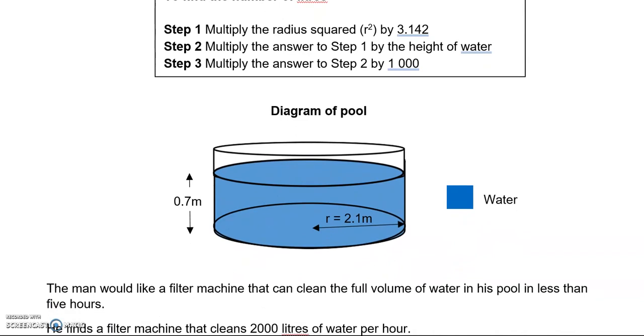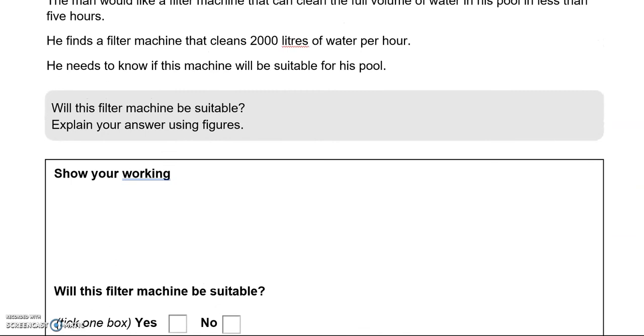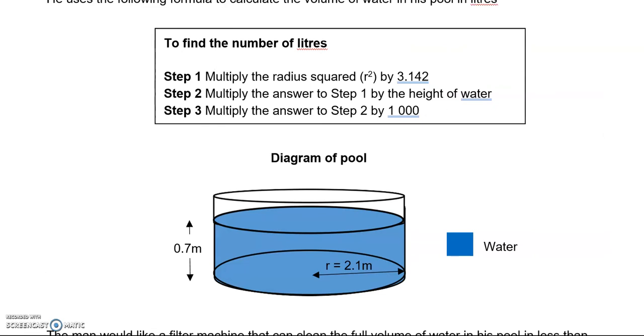The man would like a filter machine that can clean the full volume of water in his pool in less than 5 hours. He finds a filter machine that cleans 2000 liters of water per hour. He needs to know if this machine will be suitable for his pool. Let's do this step by step. Step 1, multiply the radius squared by 3.142. Radius is here, which is 2.1. So we'll go 2.1 squared times 3.142. That is equal to 13.85622.